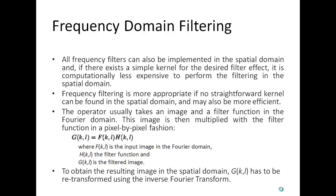Hence we do the filtering in the frequency domain. Frequency filtering is more appropriate if no straightforward kernel can be found in the spatial domain and may also be more efficient. So what we generally do is we take an image in the Fourier domain, we apply a filter function to it, and we multiply pixel by pixel to get the transformed filtered image. Now to get the resulting image in the spatial domain, we have to re-transform it using the inverse Fourier transform.